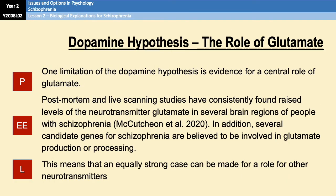As a final evaluation point, one limitation of the dopamine hypothesis is evidence for the central role of glutamate. Post-mortem and live-scanning studies have consistently found raised levels of glutamate in several regions of the brain in people with schizophrenia. Also, several candidate genes for schizophrenia are believed to be involved in glutamate production or processing. This means there is an equally strong case for the role of glutamate as for dopamine, suggesting other neurotransmitters may be involved — which is a limitation of the dopamine hypothesis.